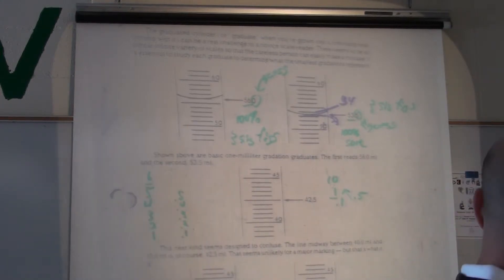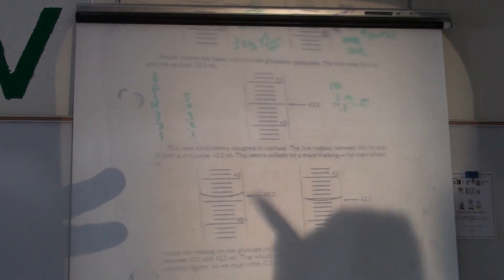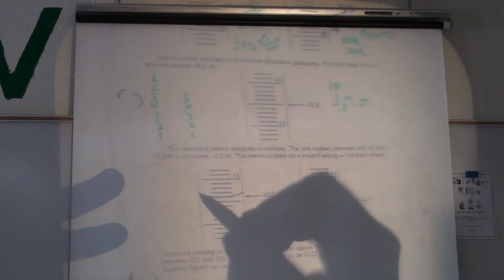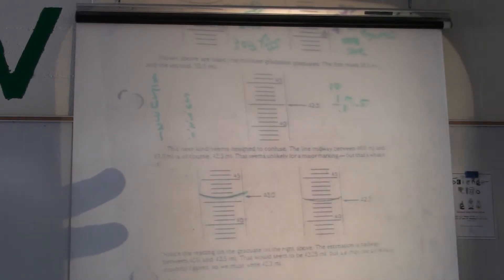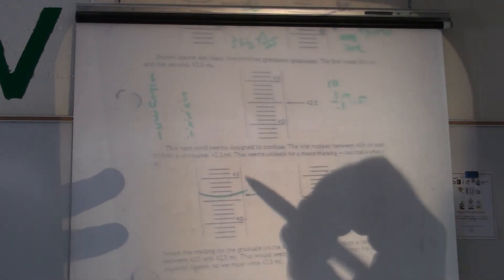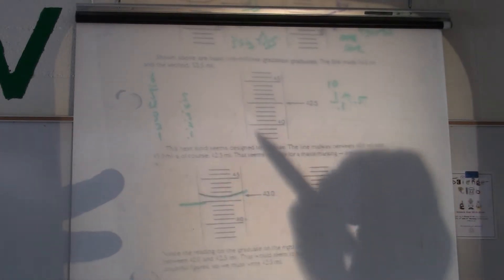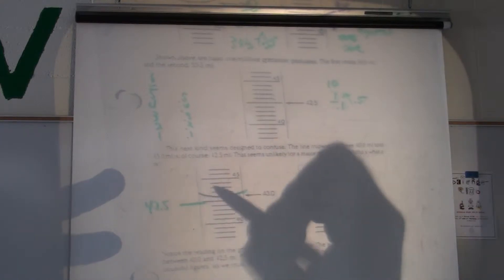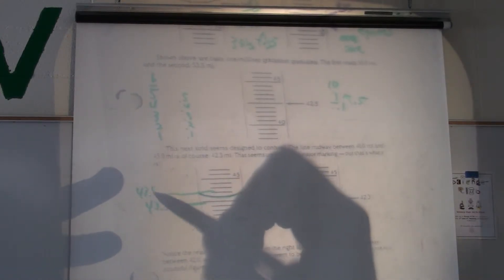it says that it's, there's our meniscus. We would still guess out to the tenths place, because basically you know it's between 42.5 and you know it's between 43.5.